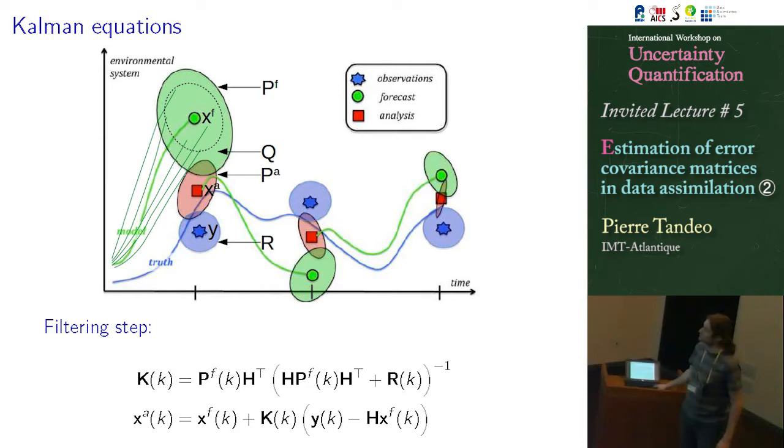So I will remind you very quickly what is the Kalman equation and how it is used in practice. So basically, if you want to track the state of the system in time. So this is a true state of the system in blue, you have noisy observation. And what we do most of the time is that we use the previous analysis. So we have different initial condition in our previous analysis. For each of the member, we apply the dynamical model.